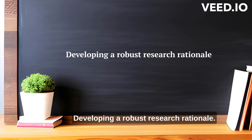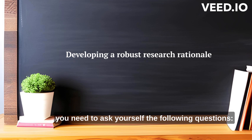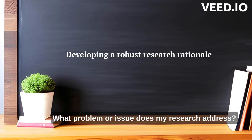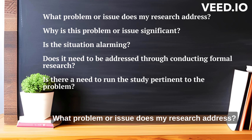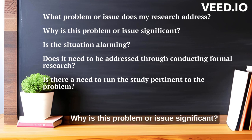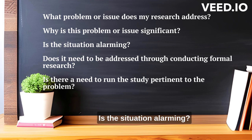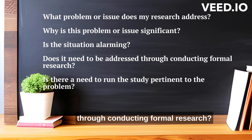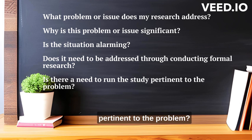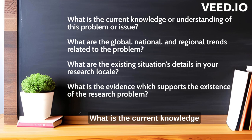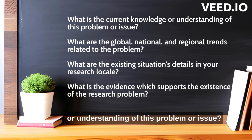Developing a Robust Research Rationale. To develop a robust research rationale, you need to ask yourself the following questions: What problem or issue does my research address? Why is this problem or issue significant? Is the situation alarming? Does it need to be addressed through conducting formal research? Is there a need to run the study pertinent to the problem? What is the current knowledge or understanding of this problem or issue?